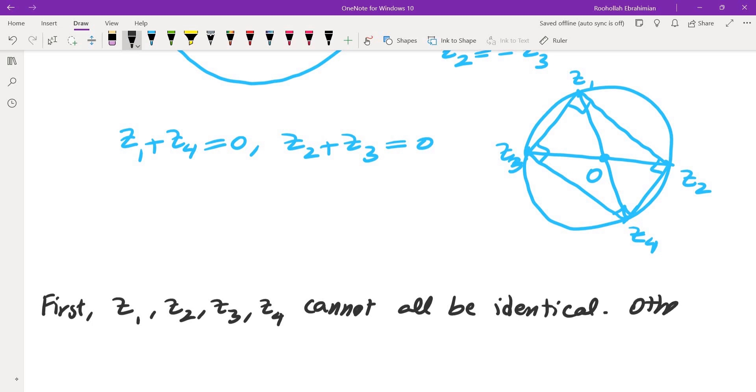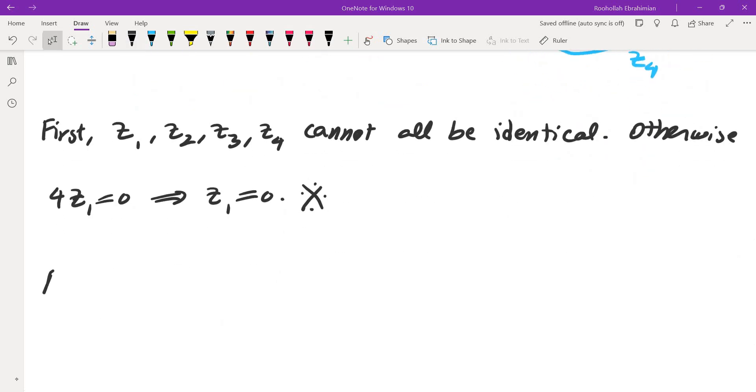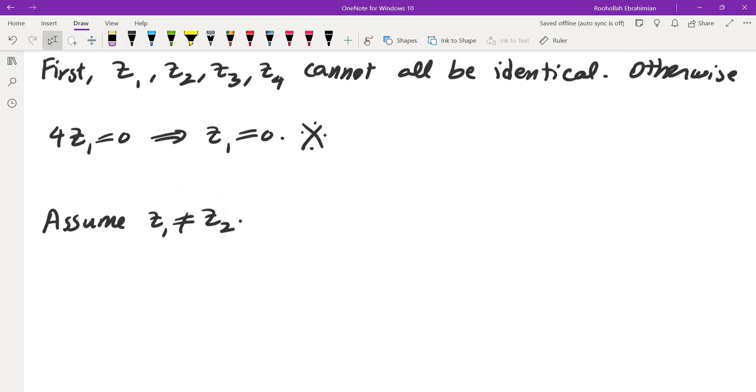So first, you would have four z1 equals zero, which means z1 is zero, and that's obviously a contradiction. So let's assume that z1 and z2 are not the same. So let's take the midpoint of z1 z2. z1 plus z2 is equal to negative z3 negative z4, which means the midpoint, I will call W, of z1 z2 is the same as midpoint of negative z3 negative z4.